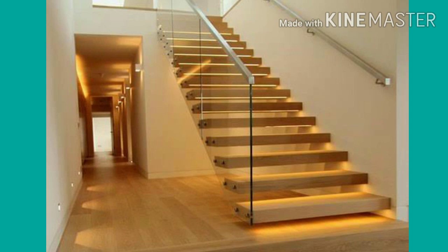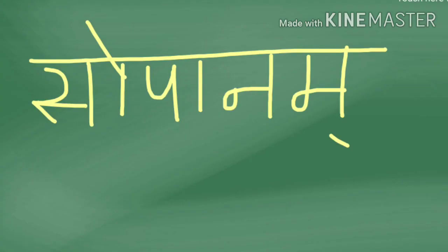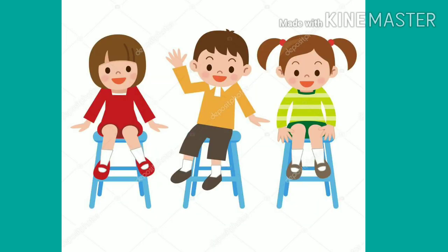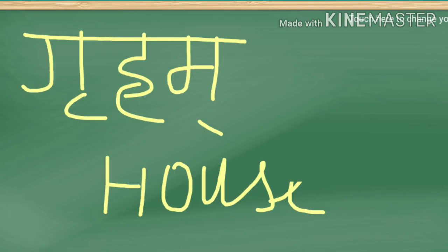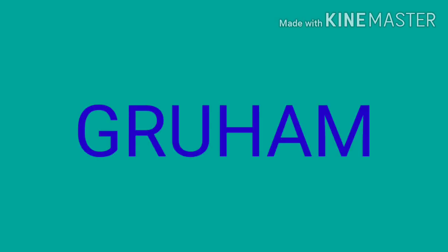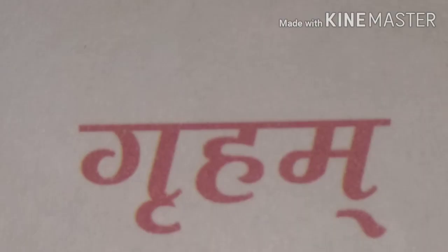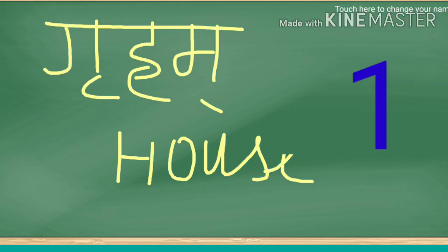The next one — what are we seeing? Steps. Staircase. Sopanam. So far we have learnt six new words in today's lesson. What is the lesson name? Griham. The first word is also Griham, meaning house.